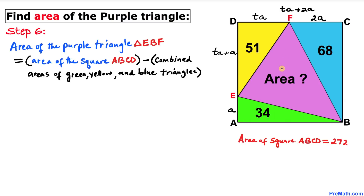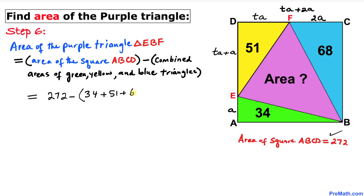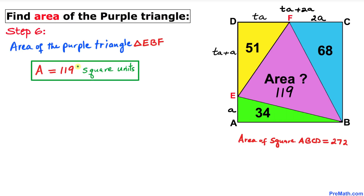Finally, the area of the purple triangle equals the area of the square minus the combined areas of the green, yellow, and blue triangles: 272 minus (34 + 51 + 68) equals 272 minus 153, which equals 119. So the area of the purple triangle is 119 square units. Thanks for watching, and please don't forget to subscribe to my channel for more exciting videos.